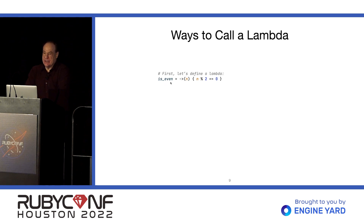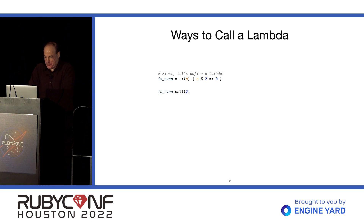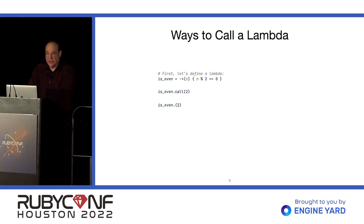Unfortunately, you can't end a local variable name with a question mark. That would be nice, but you can't. So that's a thing you lose when you use Lambdas in local variables. Of course, the conventional notation is to use the call method by name. But there's also an abbreviated notation: dot parentheses.